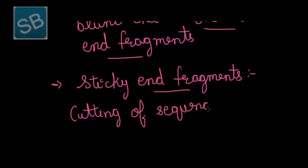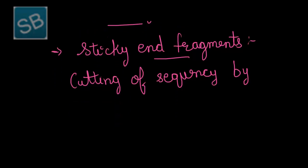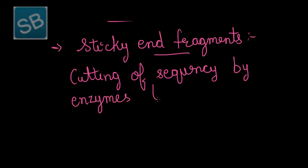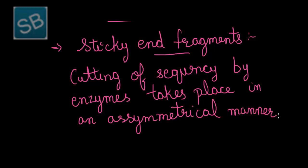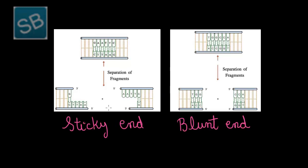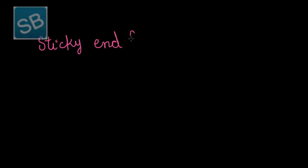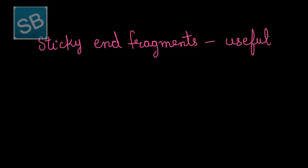The cutting by enzymes that takes place in an asymmetrical manner produces sticky end fragments, while cutting in a symmetrical manner produces blunt end fragments. As depicted in the figure showing the cutting of sequences by enzymes, out of these two types, only the sticky end fragments are majorly used and useful in recombinant DNA technology.